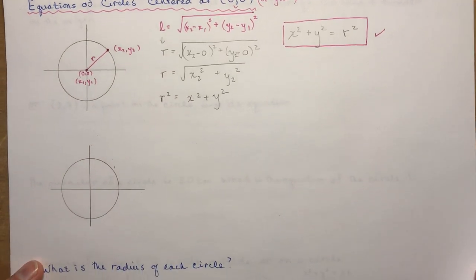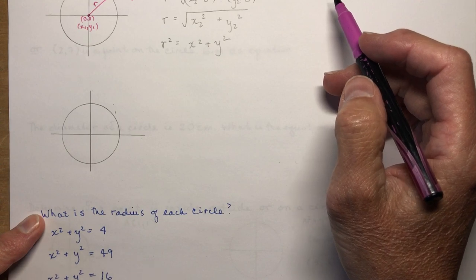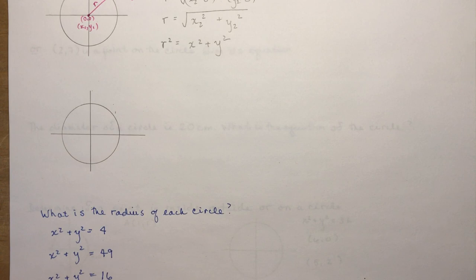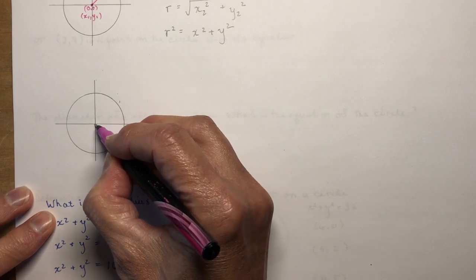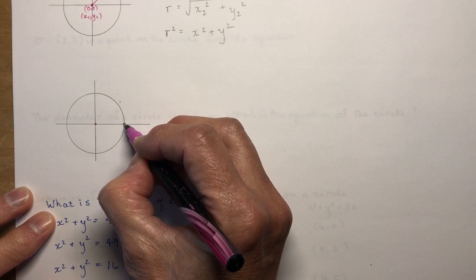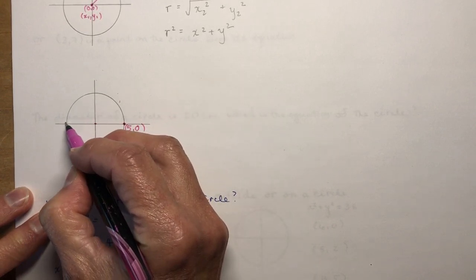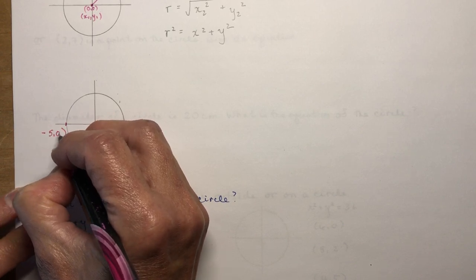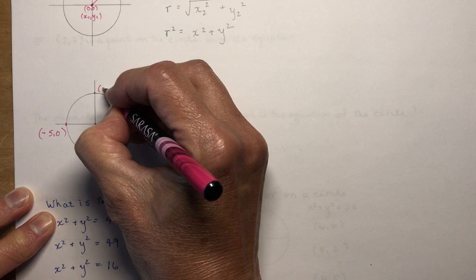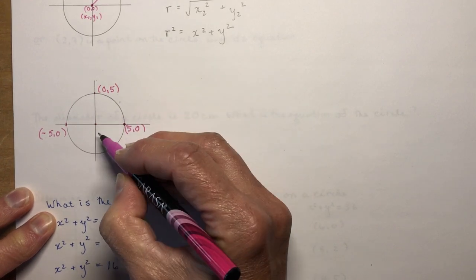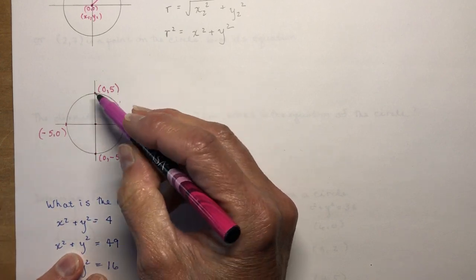Now we're going to look at what happens with some actual numbers. If I have a circle with a radius of 5, you should be able to tell me 5 points on that circle right away. If the center is 0, 0 and radius is 5, the x-coordinate here is 5, y-coordinate is 0. Going the other side: minus 5 and 0. Straight up the y-axis 5 units: x is 0, y is 5. And going down: x is 0, y is minus 5. So there are four points on the circle.